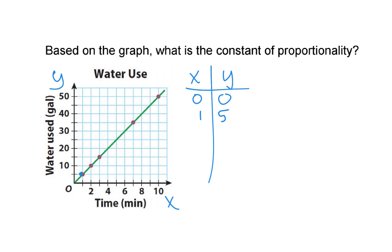Just looking at the graph and what those points represent: if two minutes have passed, then ten gallons have been used. We're looking at the table to try to find a pattern. If three minutes have passed, then fifteen gallons have been used.